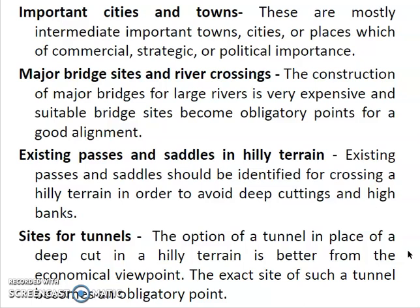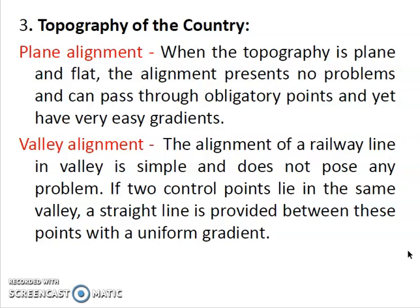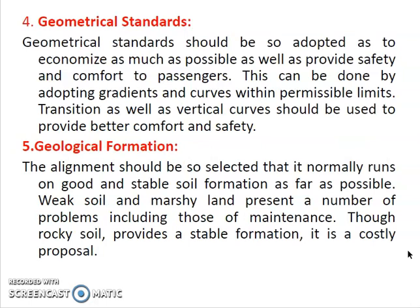Tunnels are better in hilly terrain from an economical point of view, instead of cutting through and traveling a long distance from one point to another. Topography also plays an important role in forming a new alignment. In plane and flat topography, alignment produces no problem and can pass through any of the obligatory points with easy gradients. Alignment in a valley is easy and simple. If two control points lie in the same valley, it is possible to connect them with uniform gradients.